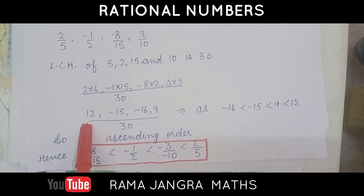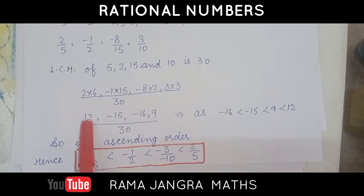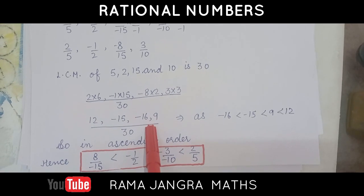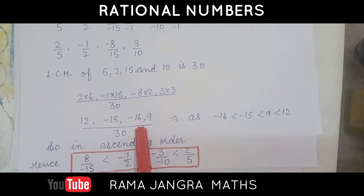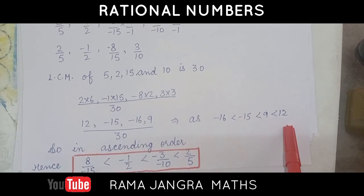We have multiplied. 12, minus 15, minus 16, and 9. Again, we have to arrange these in ascending order. So, which is smallest, minus 15 or minus 16? It is minus 16, then minus 15, then 9, then 12.